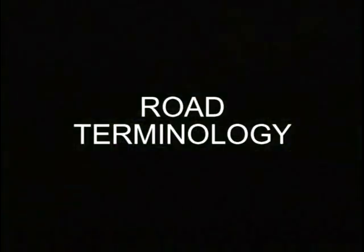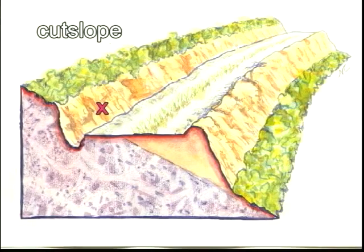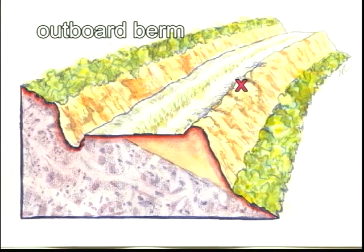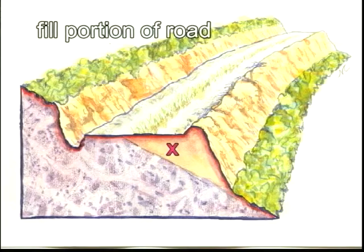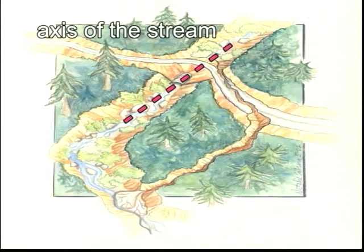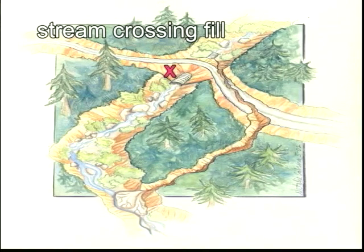And now we have a video glossary of terms which we will use throughout this video: road bed, cut slope, fill slope, inboard ditch, outboard berm, base of fill, cut portion of road, fill portion of road, ditch relief culvert, stream crossing, hinge line, axis of the stream, stream diversion, stream diversion gully, stream crossing fill, and road fill.